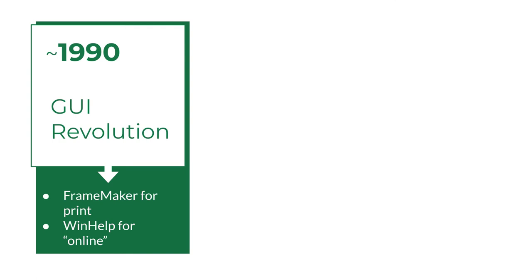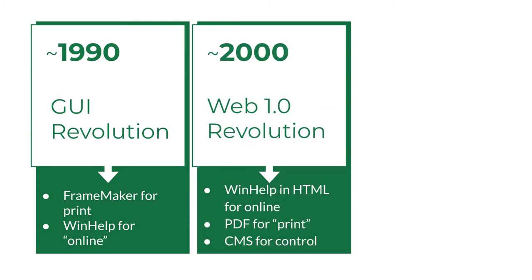In the 1990s, the computer systems the company manufactured became smaller and more user-friendly, and the technology for creating documents became more specialized. Software like FrameMaker became common. A little later, Microsoft created WinHelp, which required writers to learn how to produce documentation presented to users on the screen of a personal computer. Around 2000, the company began producing software instead of hardware, delivering documentation on the web as true online help or as PDFs. Tech comm pros used HTML-based WinHelp or XML-based FrameMaker, and content management systems became important for managing all the different types, versions, and contributors of content pushed onto the web.